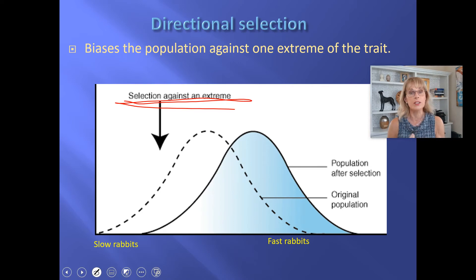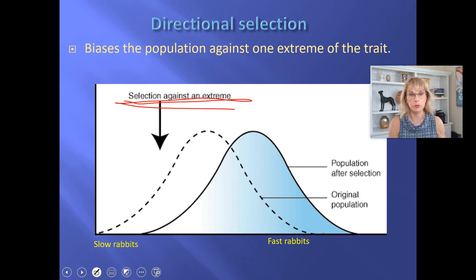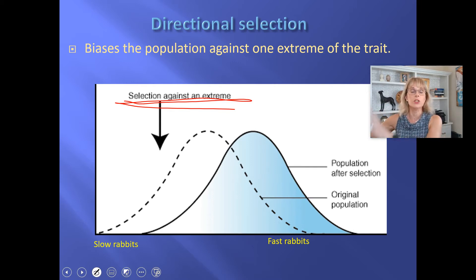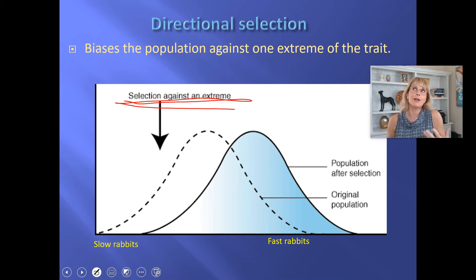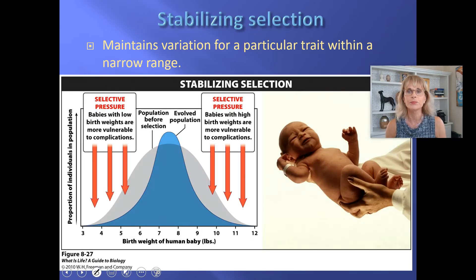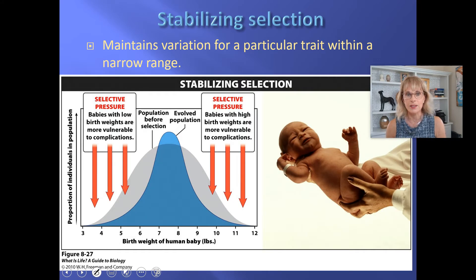We selected the Great Dane for being big. Any of the small dogs, we didn't allow them to reproduce — we only allowed the big dogs to reproduce, generation after generation. We were acting as unnatural selection in our breeding of dogs.